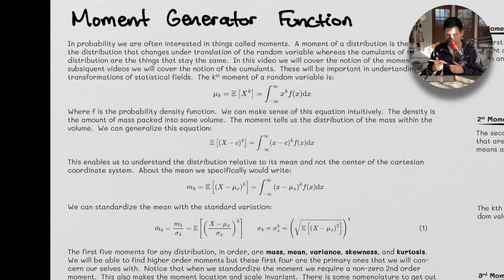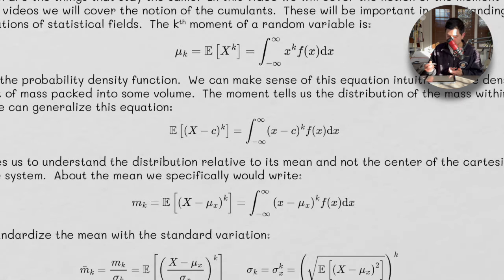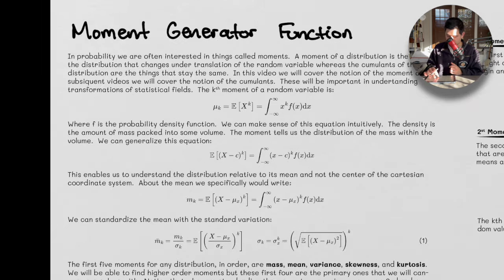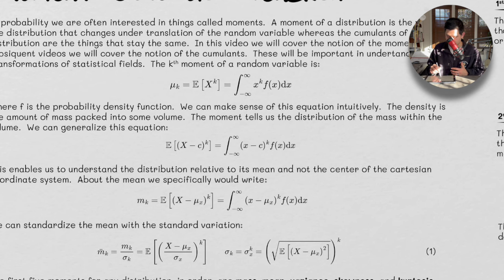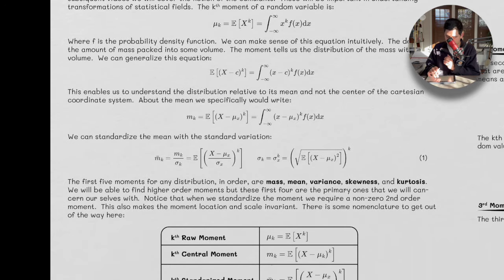We can generalize this equation. So when we generalize, we add this c. And this tells us we've shifted away from an absolute origin. And the shift is encoded through this constant c. Everything stays the same, we're just shifting from our origin. And this enables us to understand the distribution relative to its mean and not the center of some Cartesian coordinate system.